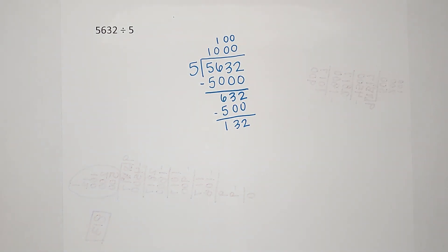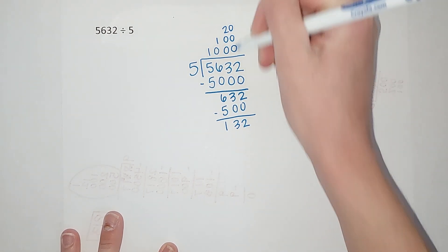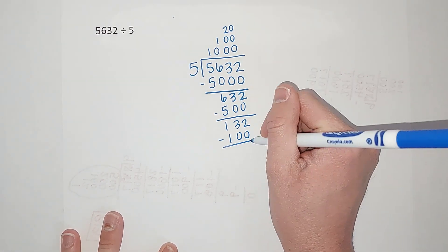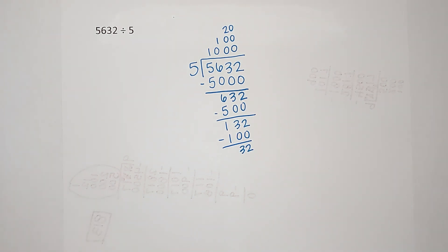Then I'm thinking, okay, how many times do I know 5 goes into 132? Well I know it goes in at least 20 times, right? Because 20 times 5 is 100. So I'm going to do 20, which gives me 100. 20 times 5 gives me 100. Subtract and I get 32.